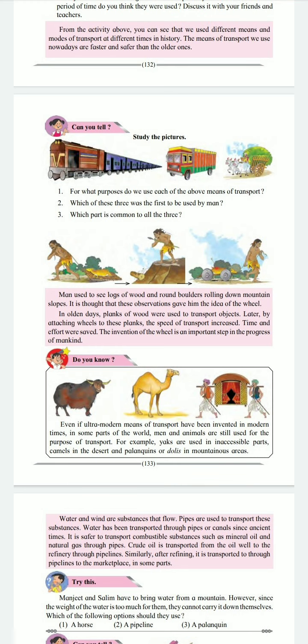Do you know, even if ultra-modern means of transport have been invented in modern times, in some parts of the world men and animals are still used for the purpose of transport. For example, yaks are used in inaccessible parts, camels in deserts, and palanquins or dollies in mountain areas.